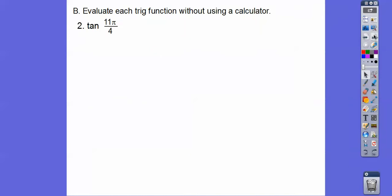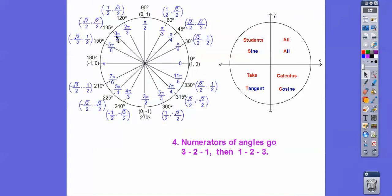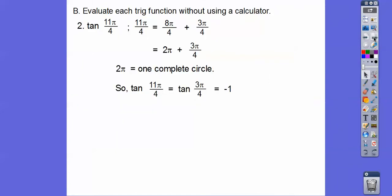How about the tangent of 11π/4? Well, 11π/4 equals 8π/4 plus 3π/4. Since 8π/4 is one full circle, we take that out and just evaluate the tangent of 3π/4, which is in quadrant 2. Tangent equals sine over cosine, so that's (√2/2) divided by (−√2/2), which equals negative 1.